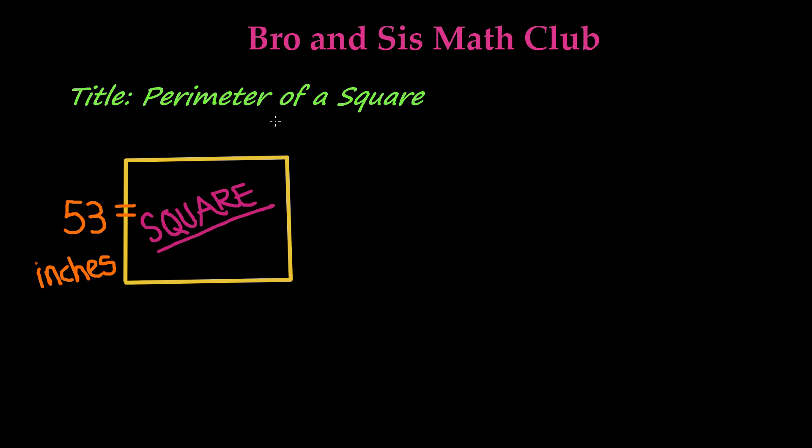Perimeter is when you add up all the sides of an object or shape and find out the outside or exterior measurement of that shape or object.